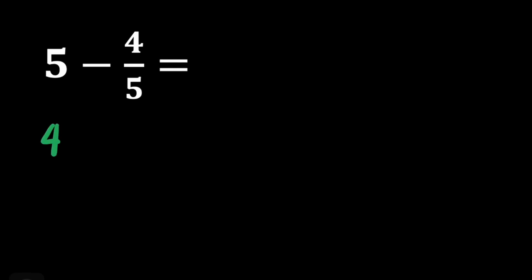We have a question here: 5 minus 4 fifths. To subtract a fraction from a whole number, we can rename the whole number to its equivalent improper fraction or mixed number. Then we can proceed as in subtraction of similar fractions. For me, I renamed this whole number into a mixed fraction because it's easy. First, all we need to do is to subtract 1 from 5. That's going to be 4. Then this one, we will just change it into a fraction, following the denominator of our subtraction. It's going to be 5 fifths.